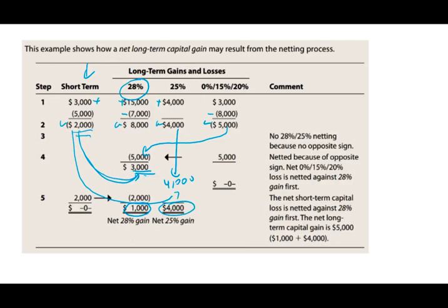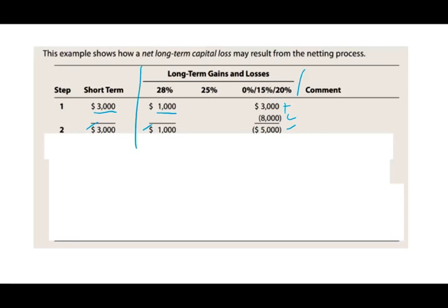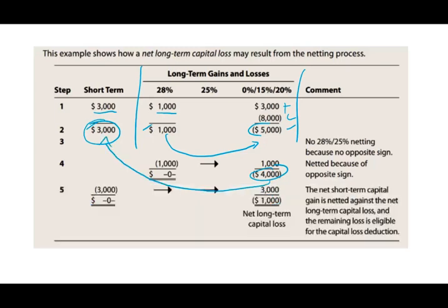Let's take a look at one more example. I have a short-term capital gain of 3,000, a long-term capital gain at 28% of 1,000, and in the 0/15/20% category I have a gain and a loss netting to 5,000 of losses. First, I net each category. Working within long-term, I take the 1,000 gain and offset it with the losses, leaving 4,000 of losses and a short-term gain of 3,000. The 4,000 of losses reduces the 3,000 gains to zero, and I am left with a remaining 1,000 of long-term capital losses.